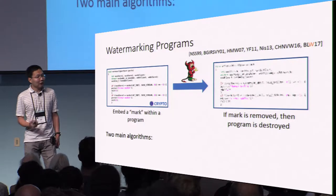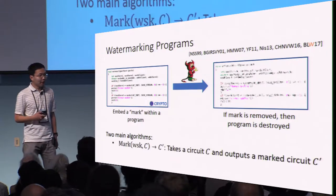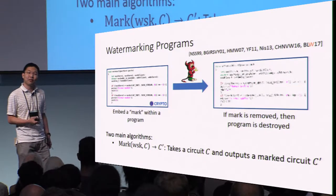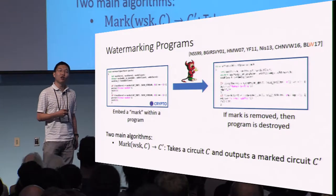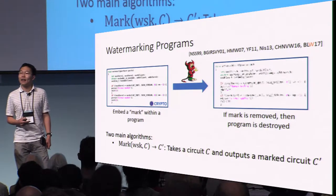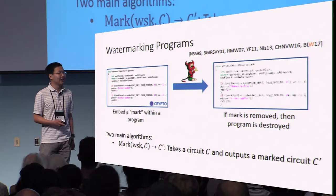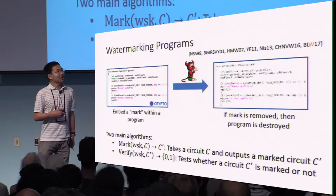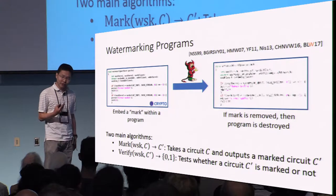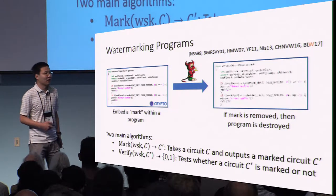More abstractly, there are two main algorithms we use to describe a watermarking scheme. First, there's a marking algorithm that takes as input a description of a program — in this work we model programs as Boolean circuits — and the output is a new circuit that should roughly implement the original functionality. There is also a verification algorithm that takes in another description of a circuit and decides whether that circuit is considered to be watermarked or not.